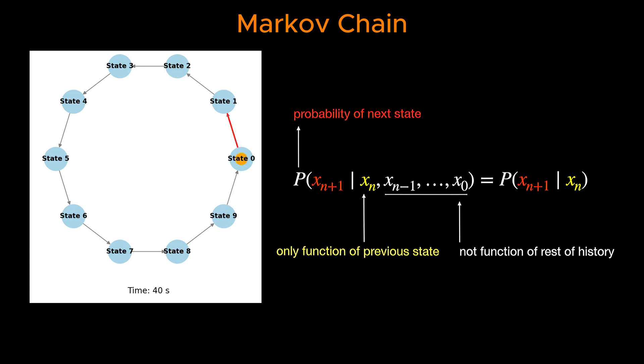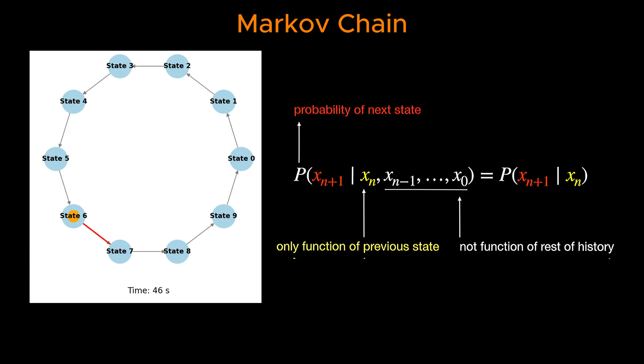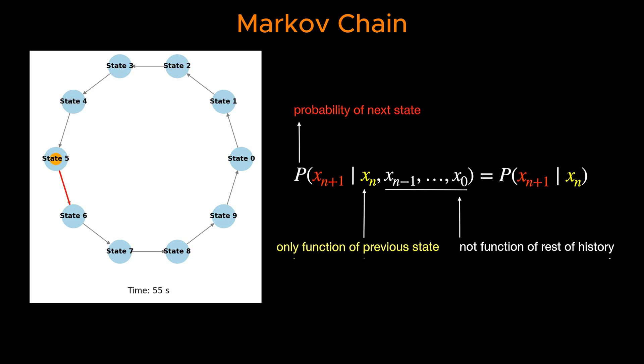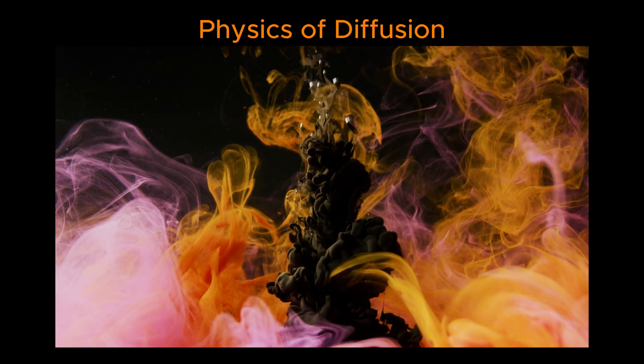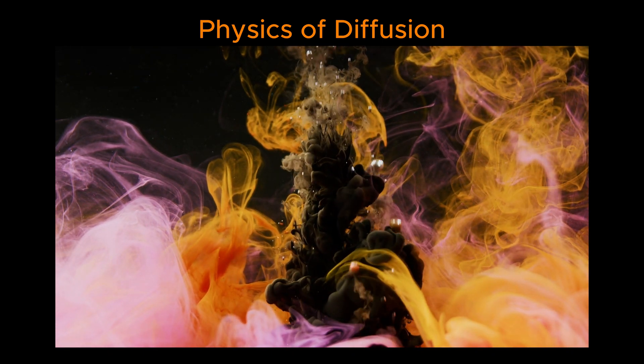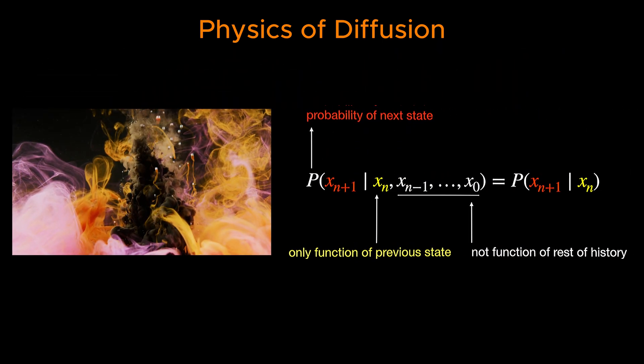This concept, now known as the Markov property, forms the mathematical backbone of Markov chains. Markov chains are closely related to diffusion processes in physics, because both describe systems that evolve over time in a probabilistic manner.